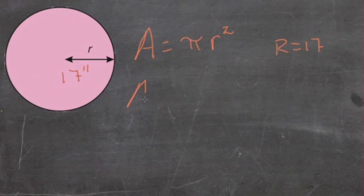That gives us A equals pi times 17 squared. We multiply 17 by itself, and then multiply by 3.14.